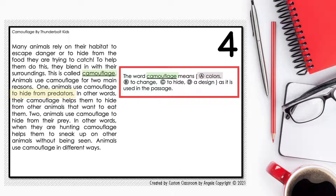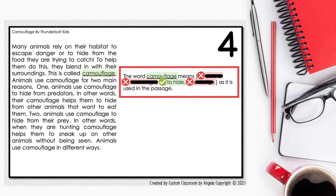Now let's evaluate each answer choice, knowing that it needs to define the meaning of camouflage. Answer A, 'colors' — this is incorrect since it does not talk about hiding from predators. Answer B, 'to change' — this is also incorrect since it does not talk about hiding from predators. Answer C, 'to hide' — this is good since it directly says 'to hide,' like in the passage. Answer D, 'a design' — this is also incorrect since it does not talk about hiding from predators. So we can eliminate answers A, B, and D. This leaves us with C, our best answer choice.